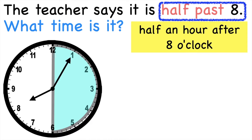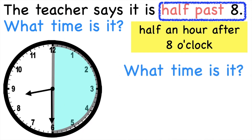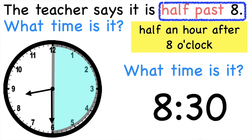5, 10, 15, 20, 25, 30. So what time is it? It's 8:30. So when we say half past 8, that means it is 8:30. Always remember, children, that in one hour we have 60 minutes. So the half of 60 minutes is 30 minutes. That's why half past 8 means 8:30.